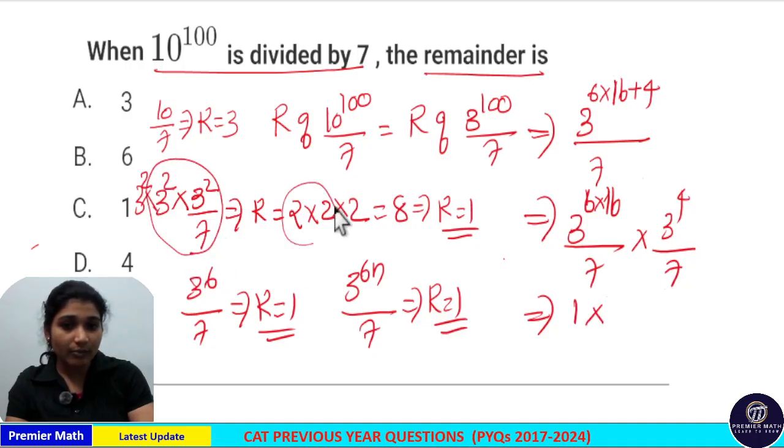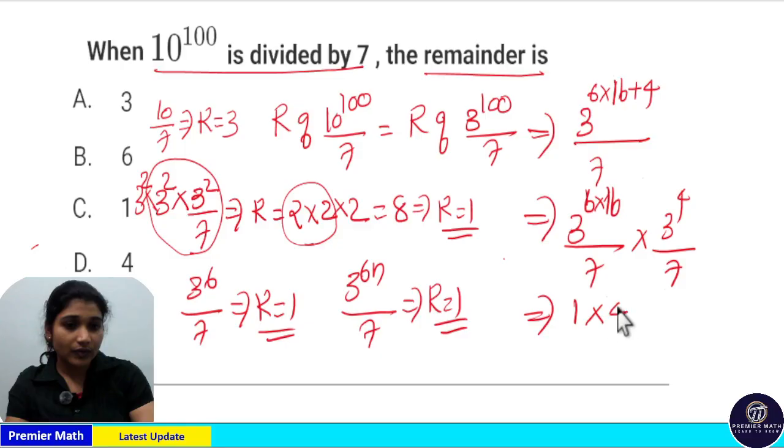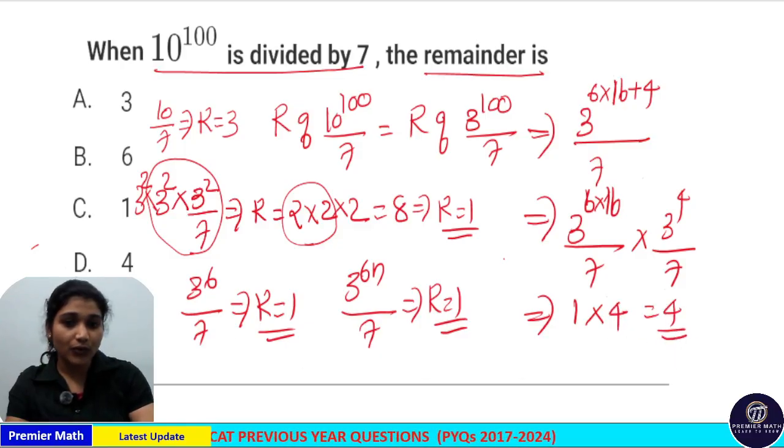And 3 raised to 4 divided by 7 gives remainder 4. So the final answer is 1 × 4 = 4. Option B is your answer.